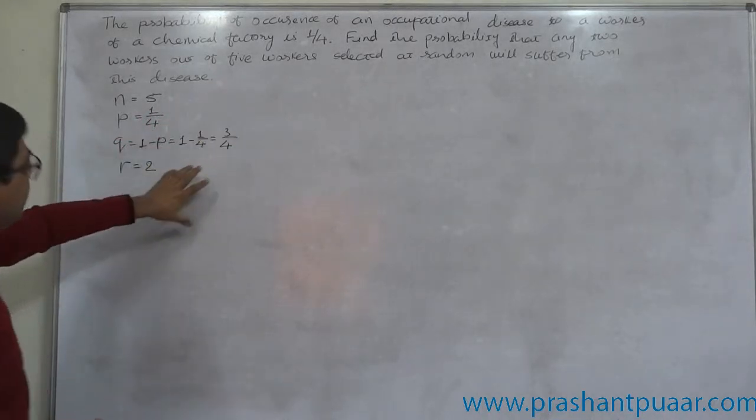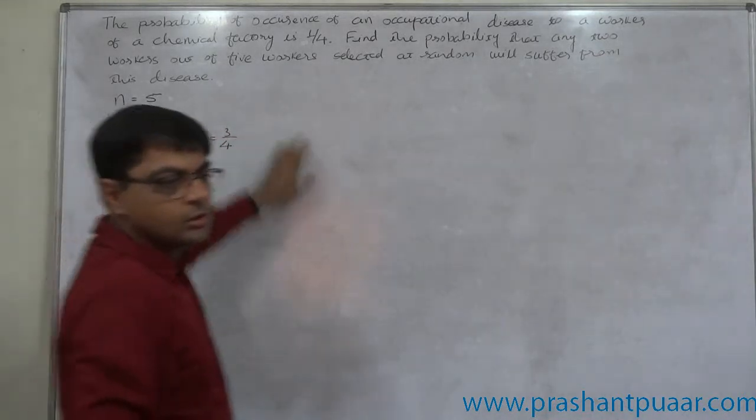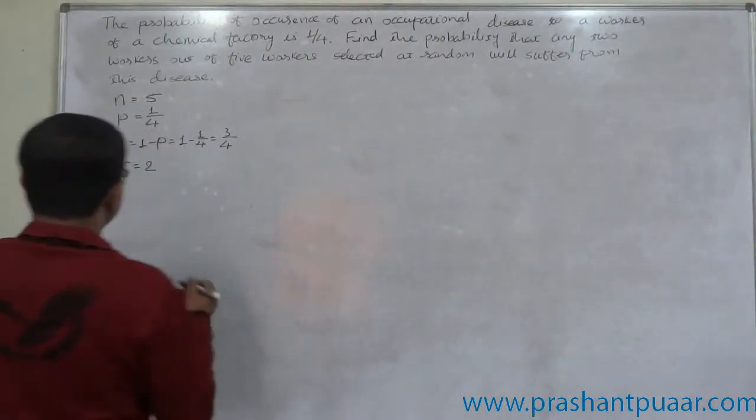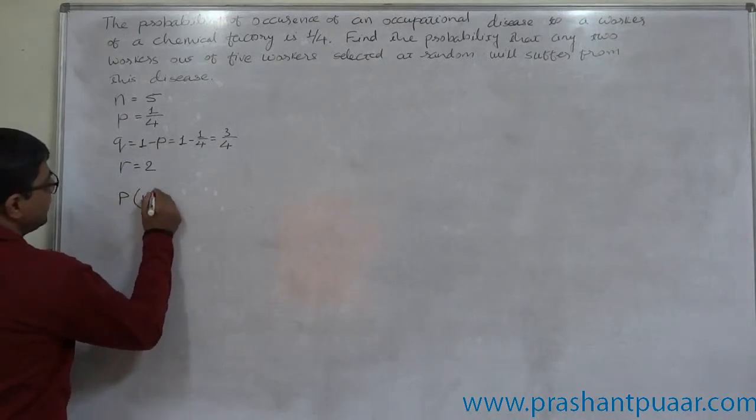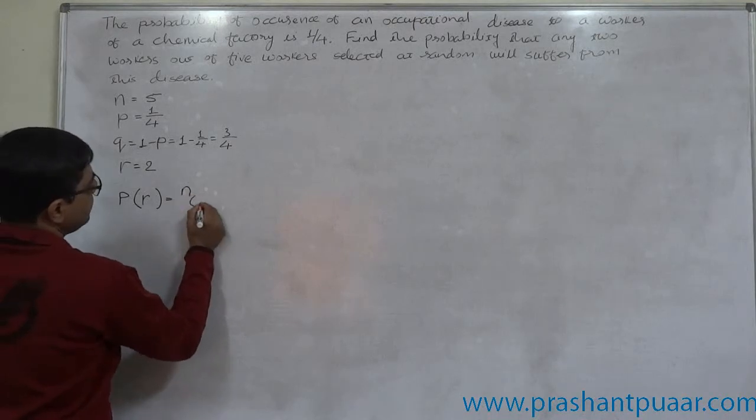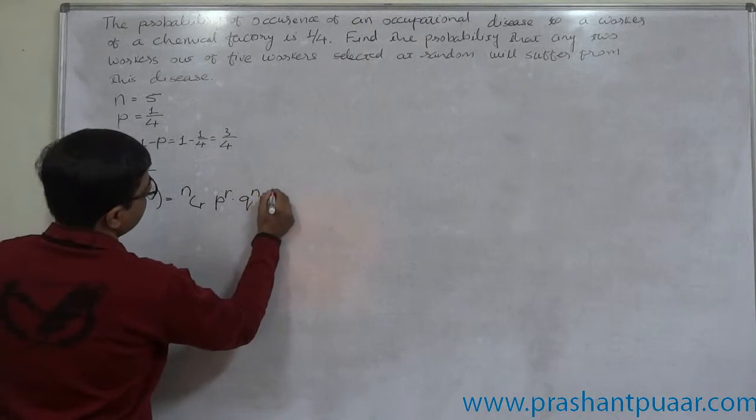Or the conditions of binomial distributions are satisfied by this data. So we can use the binomial probability density function to solve this problem. And the PDF of binomial distribution is probability of R successes equals to NCR into P raised to R into Q raised to N minus R.